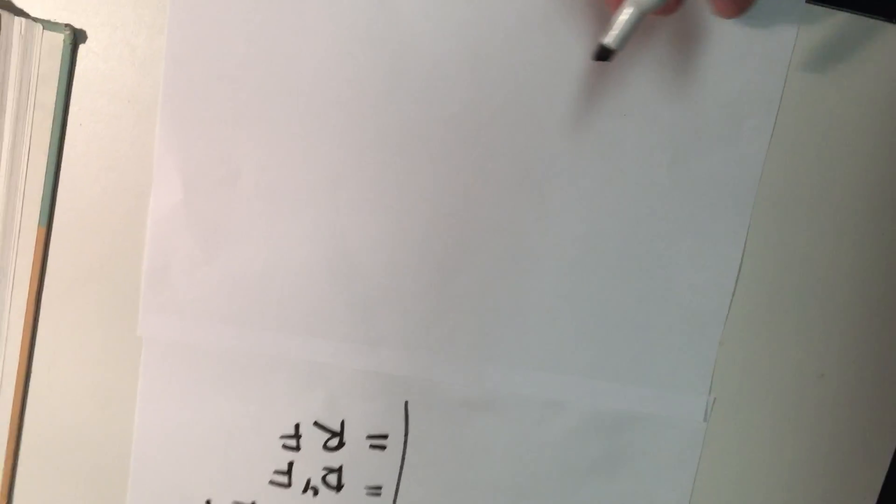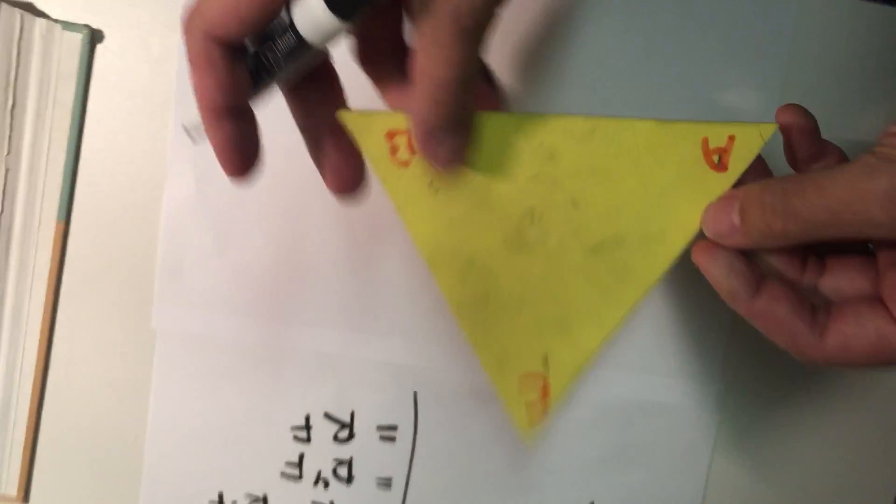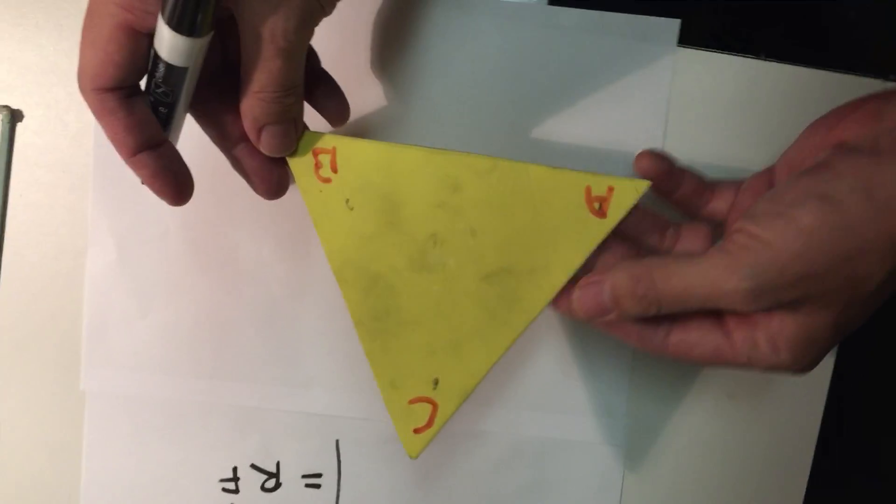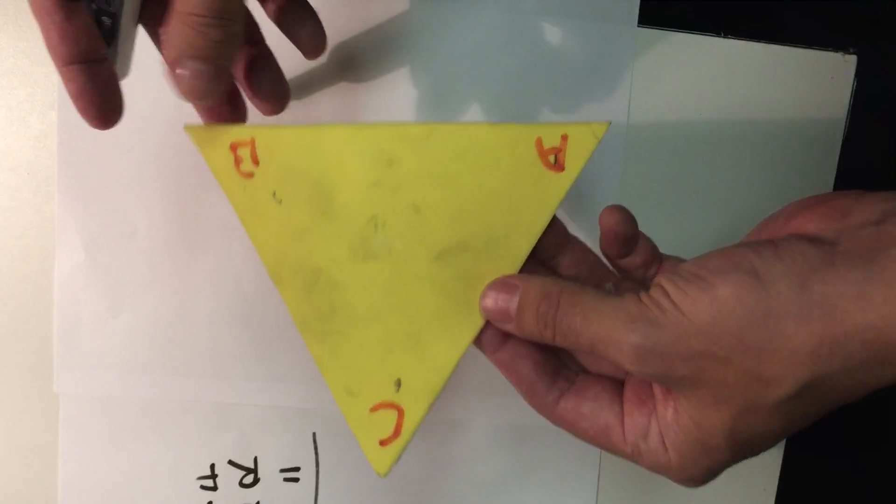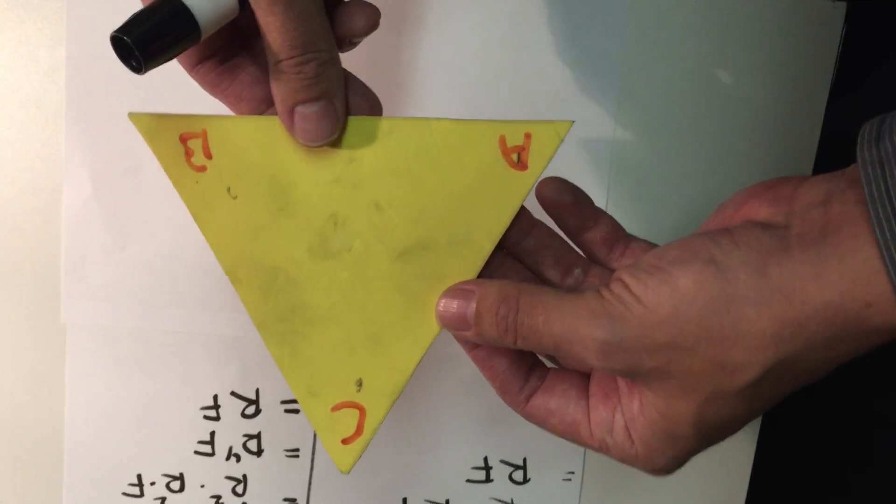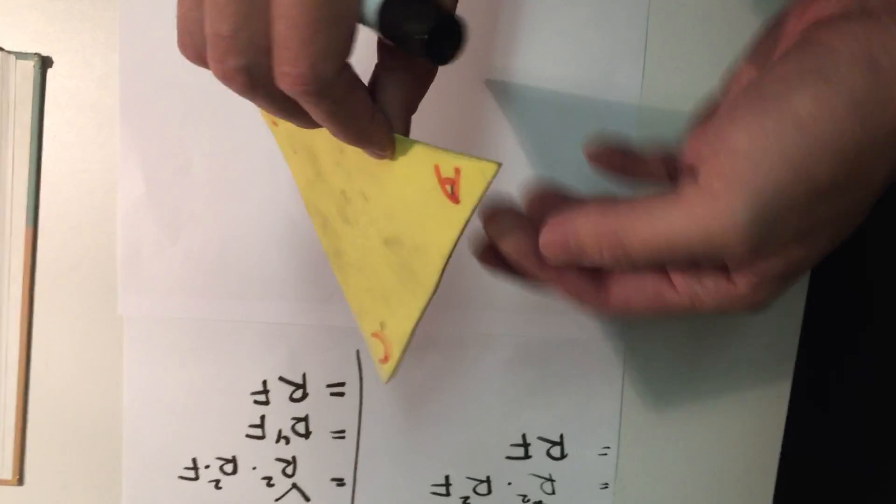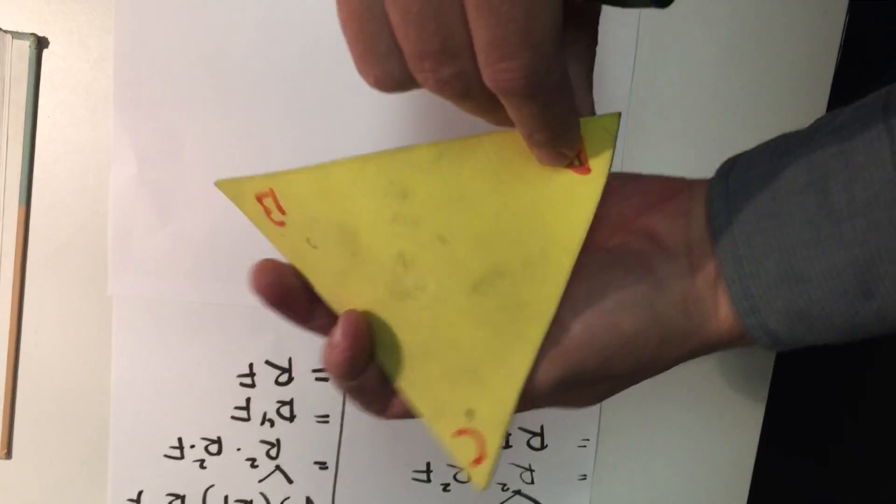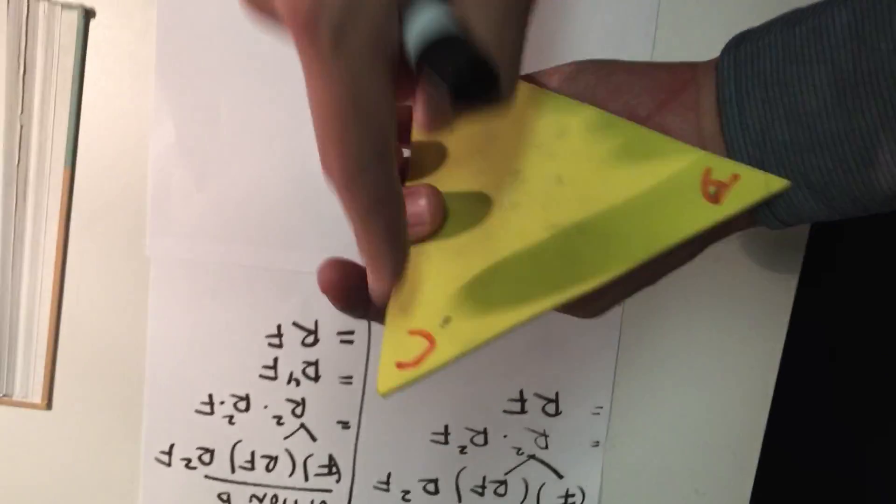My third way of doing it involves an actual triangle, a physical triangle, in which I've written A, B, and C in the vertices like that. Notice that the vertex A is also called A on the flip side. B is B, and C is C.